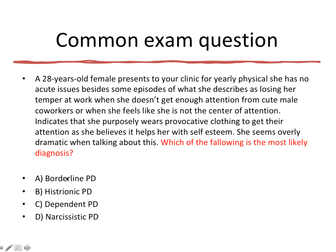Last sentence first, look over the answers, then start reading the question. A 28-year-old female presents to a clinic for yearly physical. She has no acute issues besides episodes of losing her temper at work when she doesn't get enough attention from male co-workers or when she feels she's not the center of attention. Right there I have my answer — she's an attention seeker. That points me to histrionic personality disorder. She purposely wears provocative clothing to get attention — again, confirmation of histrionic.